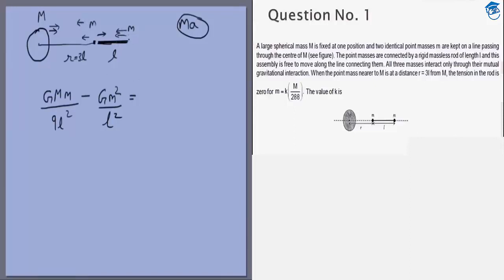And for this particle the forces, both of them acting towards the left, are GMm by R plus L whole squared. R is 3L plus L is 4L, so by 16L squared plus Gm squared by L squared. So now all that's left is to simplify this.